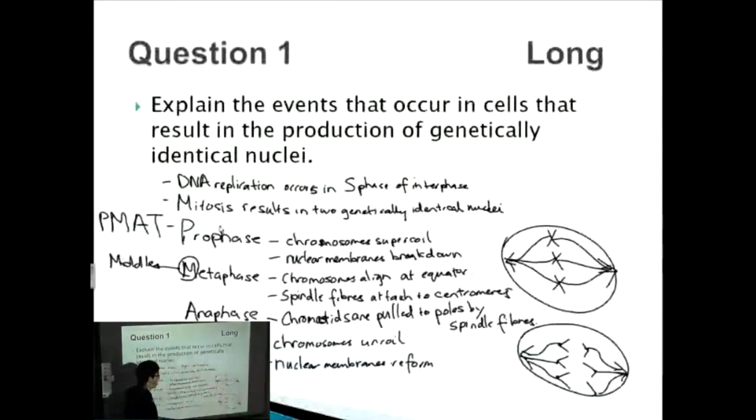We talked about how we needed about eight points to get full marks. So let's count them. So the first one we've got is DNA replication. So one, two, three, four, five, six, seven, eight, and hopefully nine, just for allocating the different stages of mitosis to the correct stages.